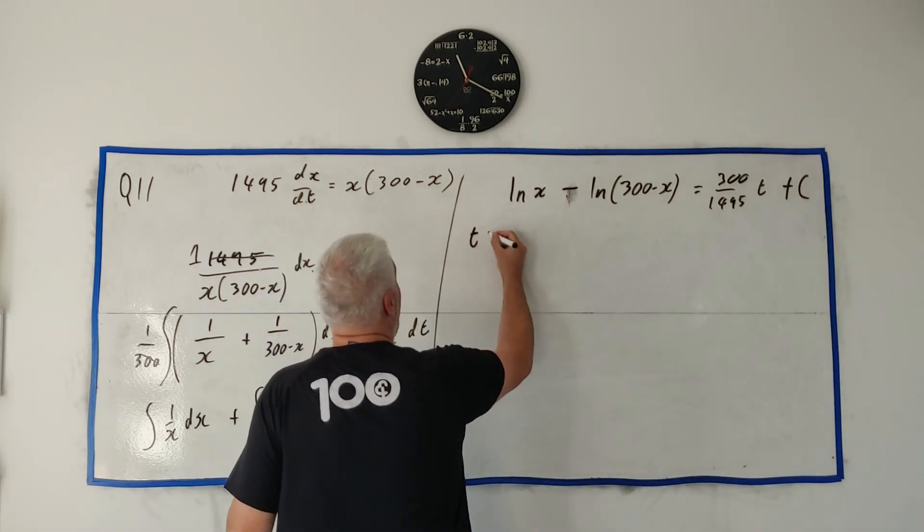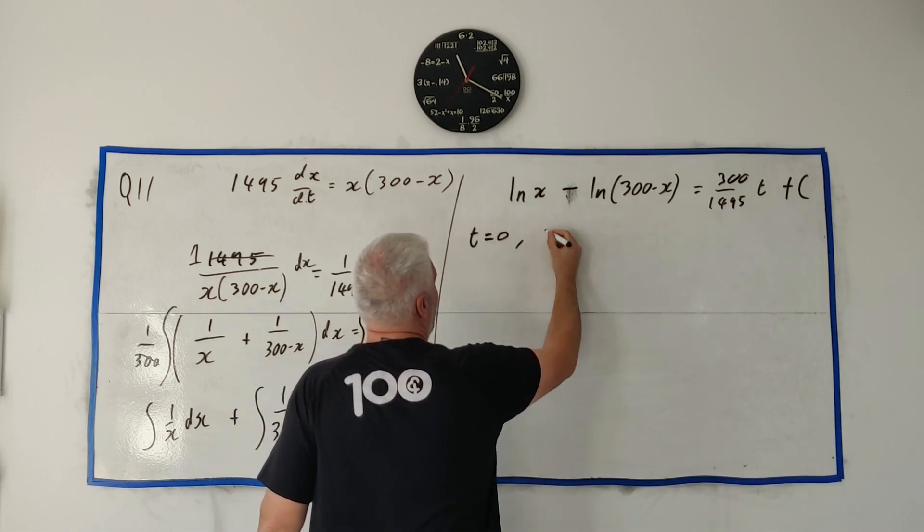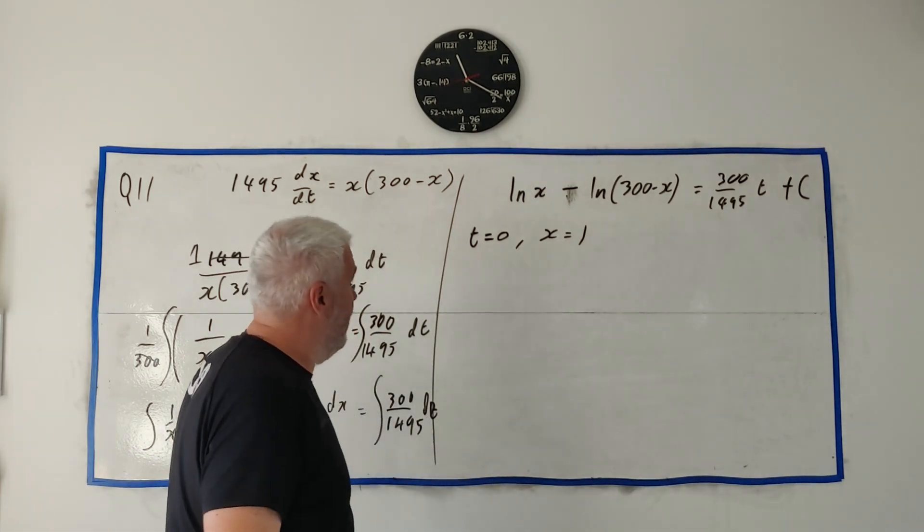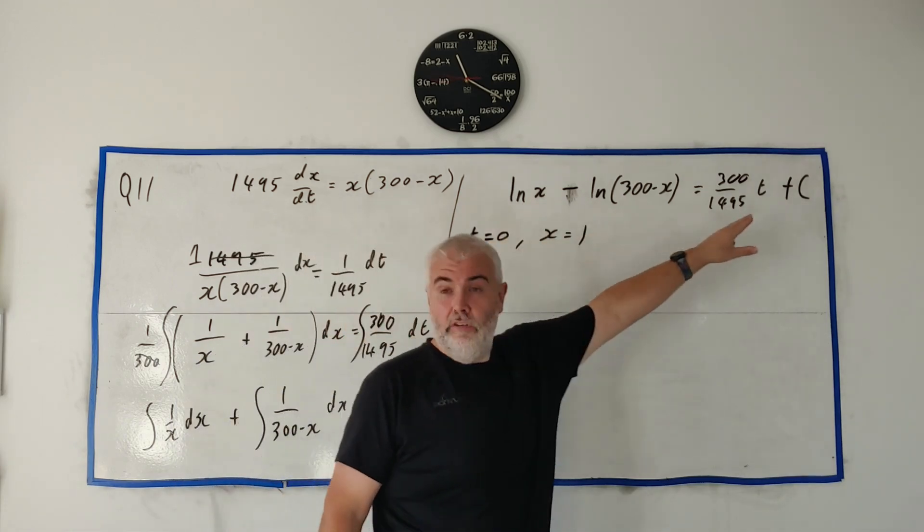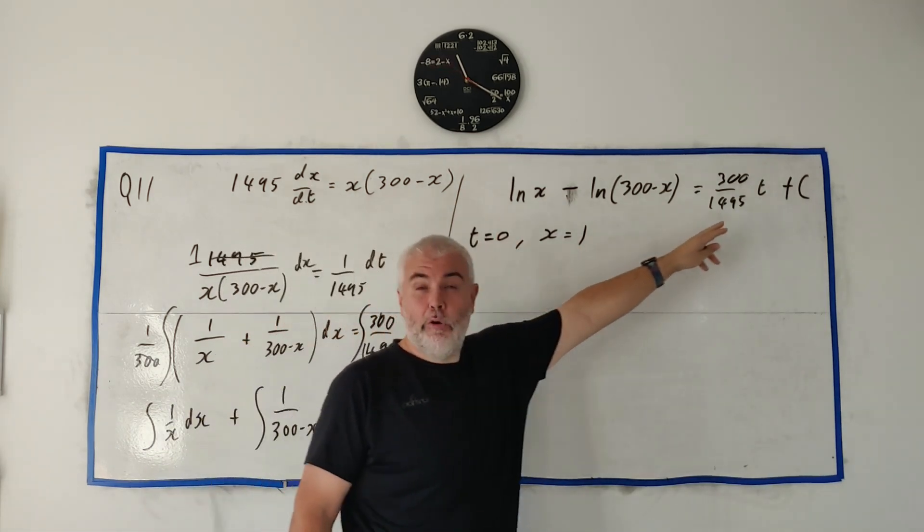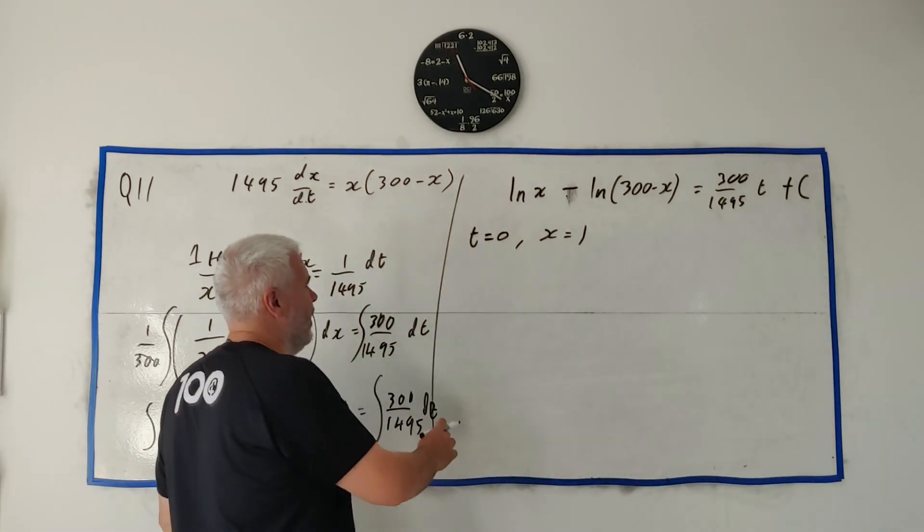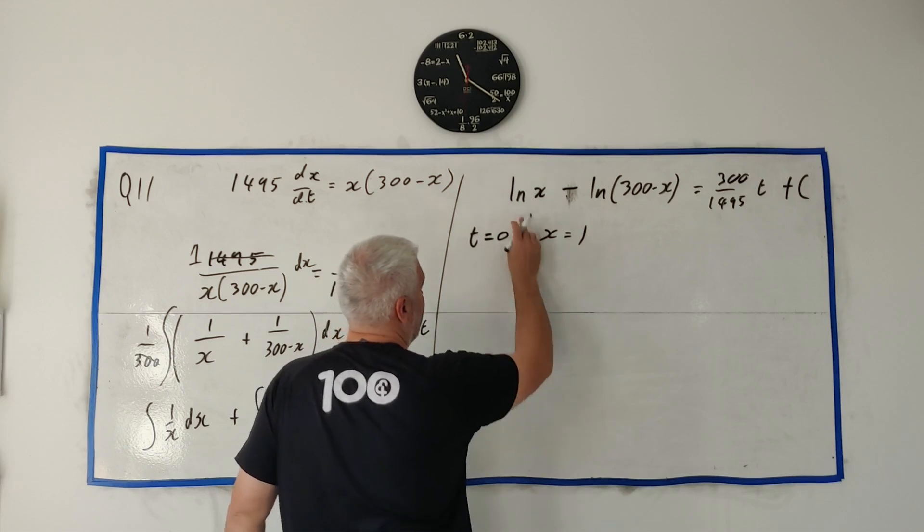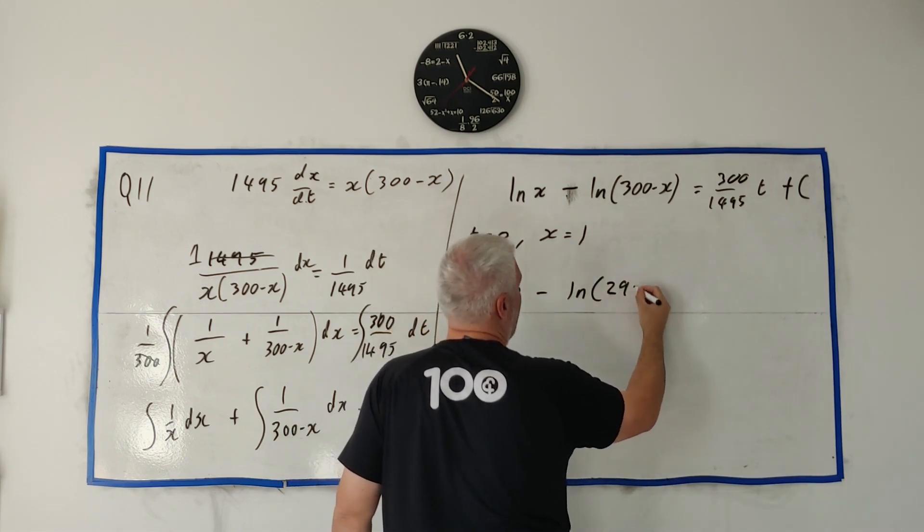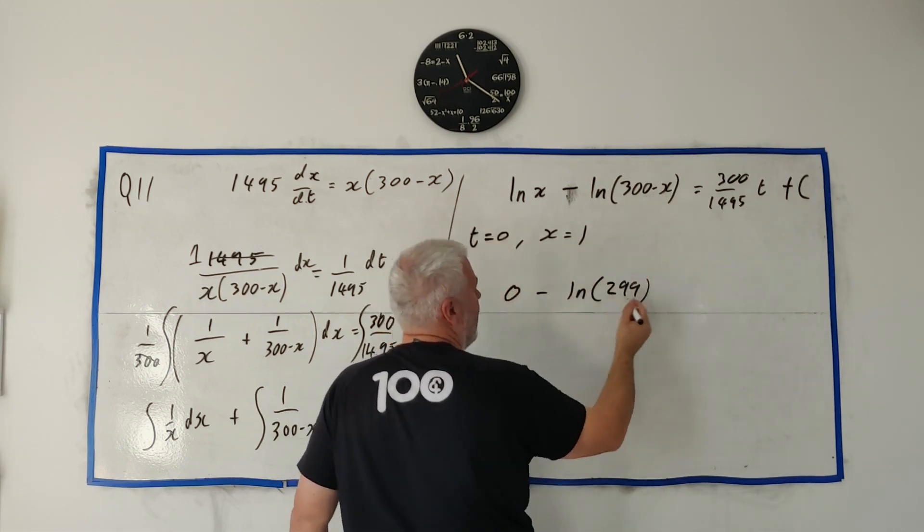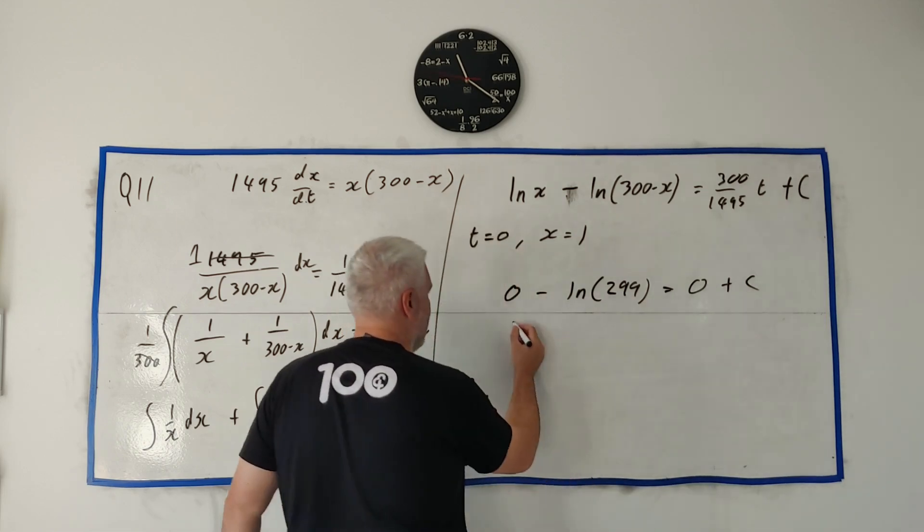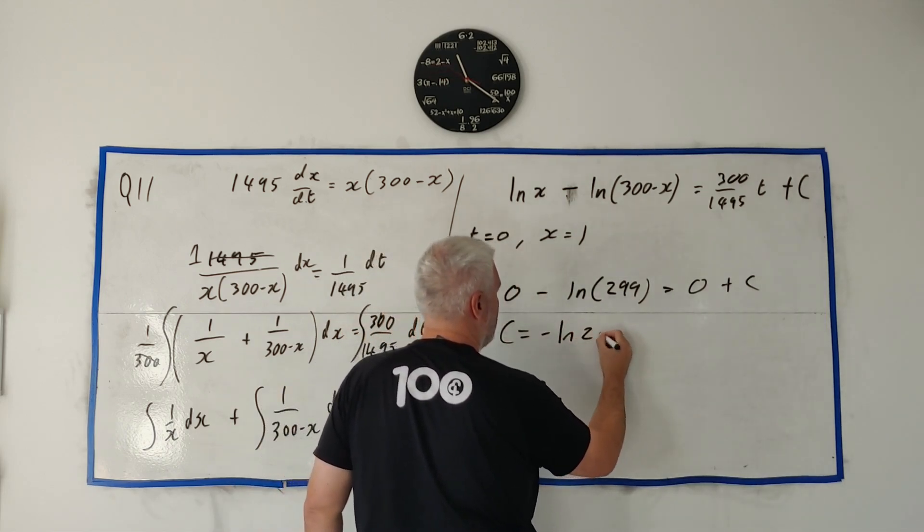So to do that, we must remember that when t equals 0, x equals 1. So that's a bit of information they gave us right at the top. So we can put all that in and solve for c. This is the starting point. At the starting point, we know lots of things, and c won't change. It's constant the whole way through. So if I put all this in, natural log of 1 is 0. Natural log of 1 is 0 minus natural log of 299. That's just a 1 now. And that equals, t is 0, so that equals 0. So, c simply equals minus natural log of 299.